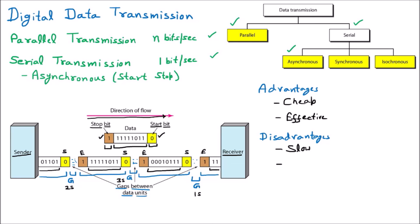Another major disadvantage is the additional overhead of start and stop bits. Every character (8 bits) has one start bit and one stop bit added, so instead of sending 8 bits per character, we are actually sending 10 bits. This means for every character, 2 extra bits are added, which is overhead on the network. So with asynchronous transmission, although the data is 8 bits, you end up sending 10 bits — that is the overhead of asynchronous transmission.